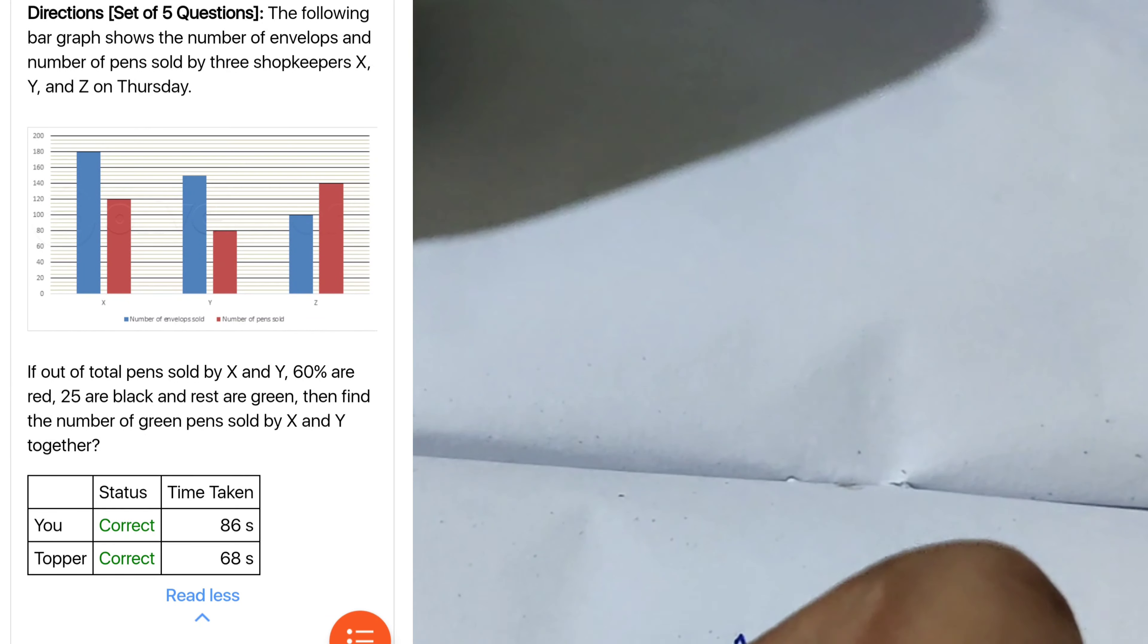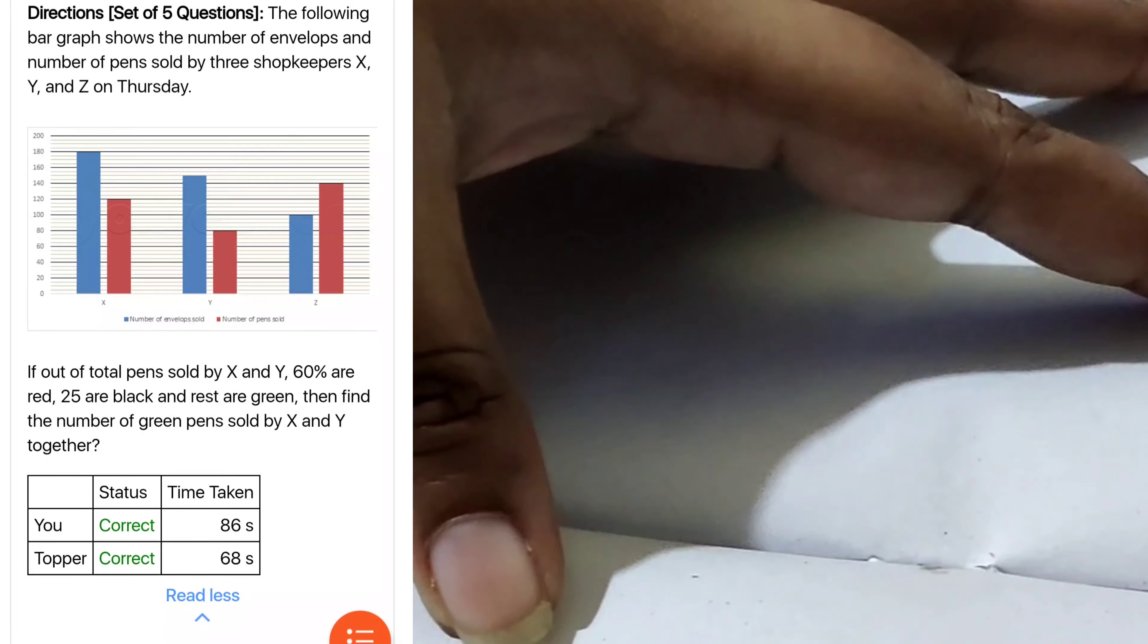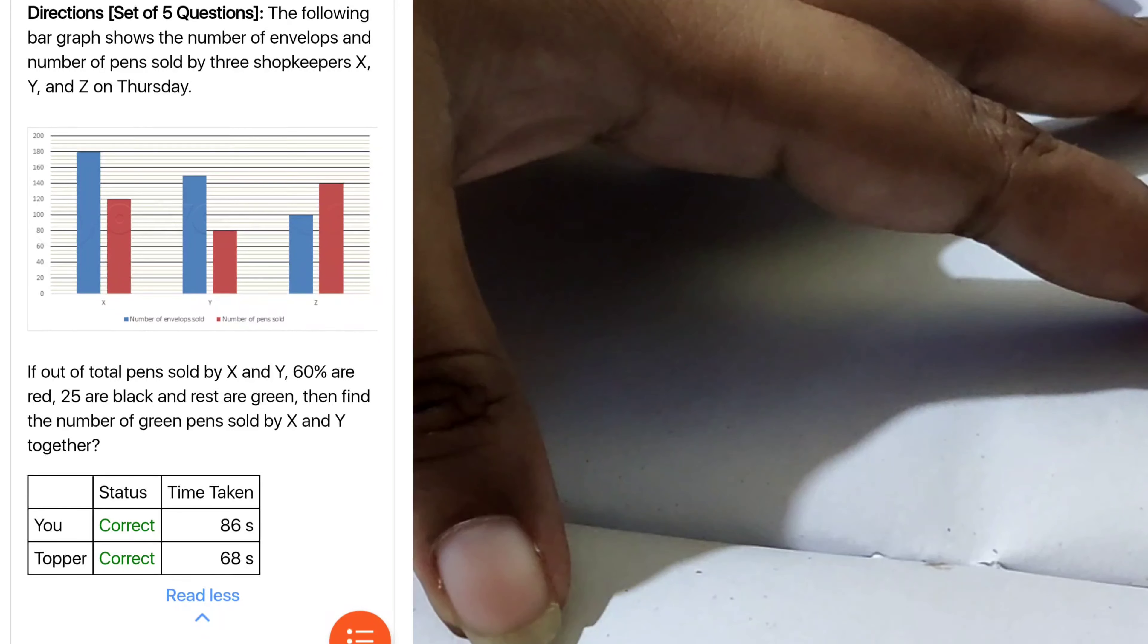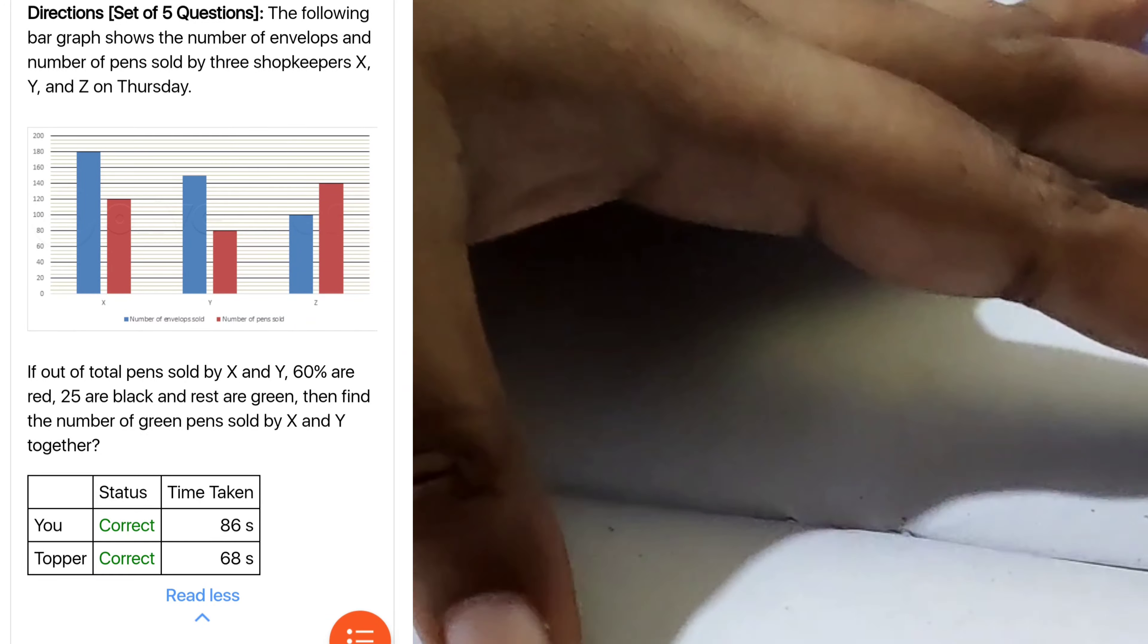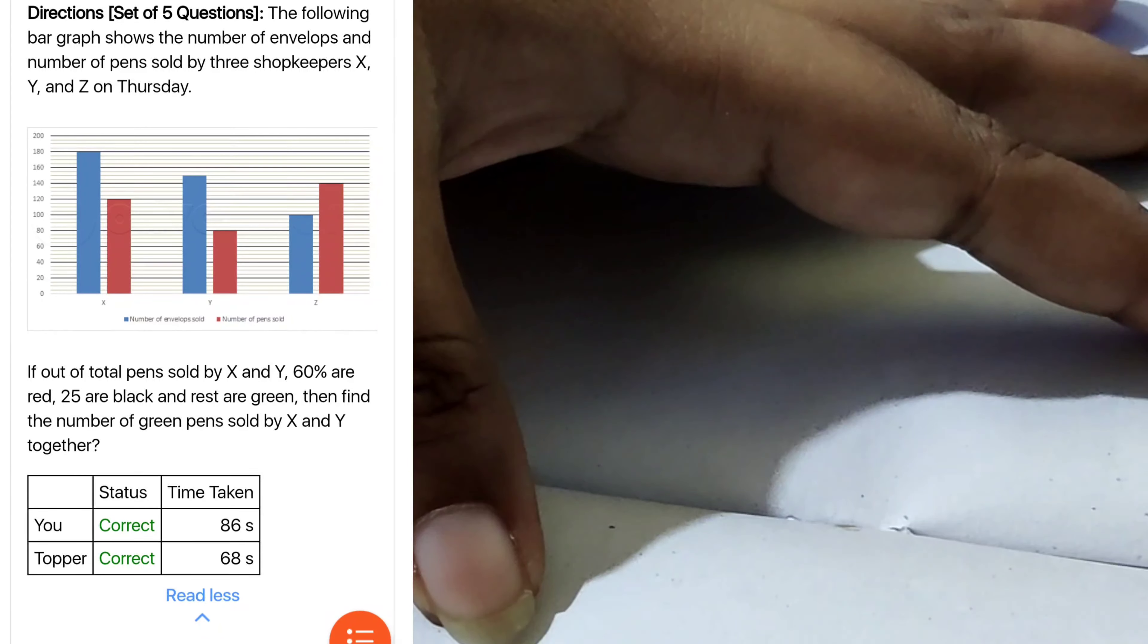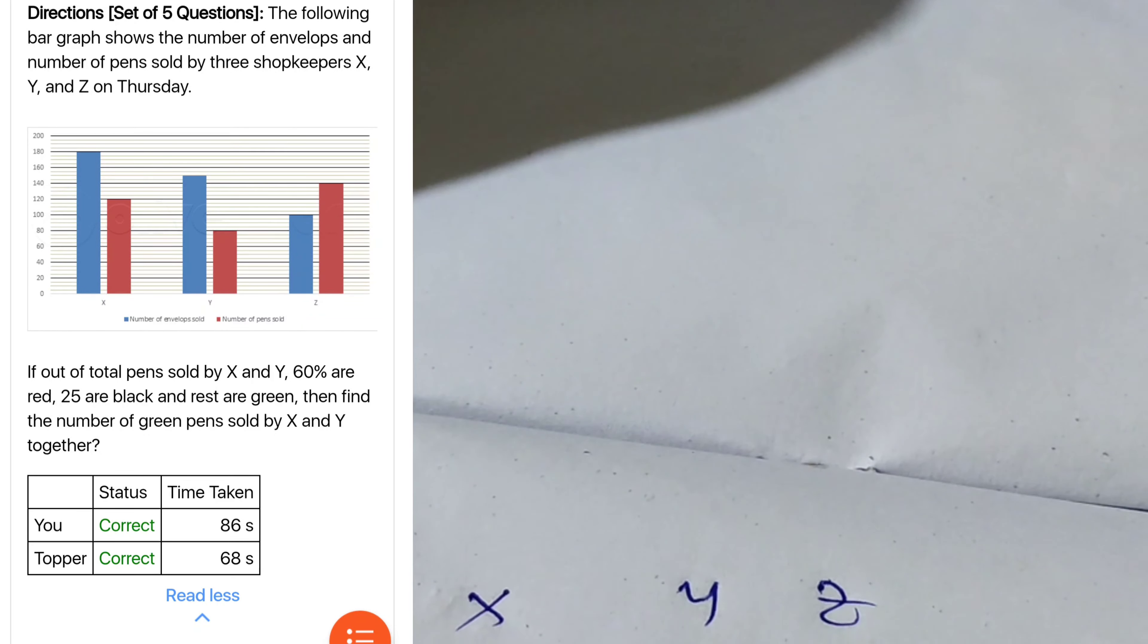First question, if out of total pens around XYZ on Thursday, XYZ total pens rolled, XYZ and Y, 60 percent are red, 25 are black. So total pens of XYZ and Y is 200. In this, red is 60 percent, which is 120, and 25 are black. Rest are green. So 120 plus 25, 145, so it's 55, option A.